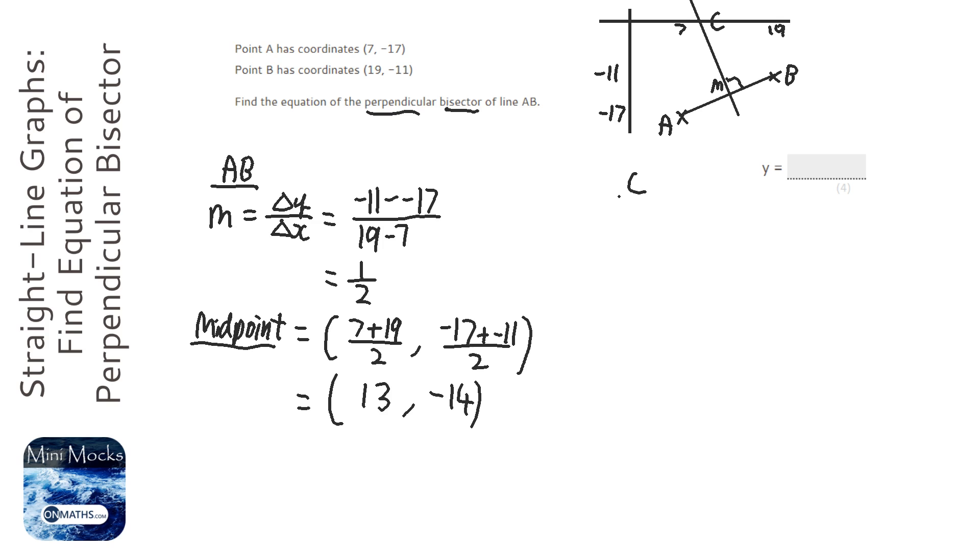Now, you might be wondering, why did we find the gradient of line AB? Well, perpendiculars have a kind of weird connection, where if you multiply both their gradients, it equals minus 1. The way we use this is to convert a gradient to a perpendicular gradient, we do two things. We find the reciprocal of the gradient, and we times it by minus 1. So, to find the gradient of line C, we're going to flip it, so the reciprocal of half is 2, and times it by minus 1, so it's going to be minus 2. A way of checking that is, if you multiply the two gradients together, you should equal minus 1, which a half times minus 2 is minus 1.